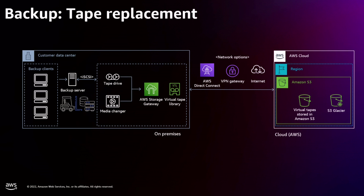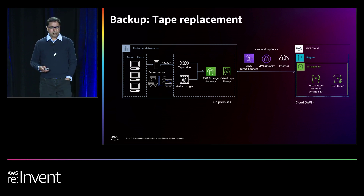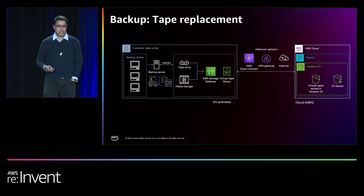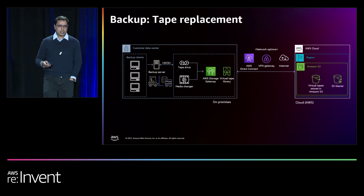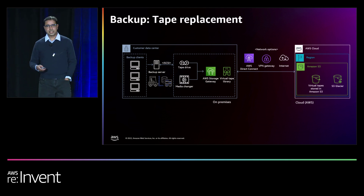A similar use case involves customers still deploying tapes — LTO tape vendors are still selling tons of tape to enterprise customers. With Storage Gateway, instead of using a physical tape library, the target becomes a virtual tape gateway, and customers can point their data to the cloud. This eliminates the need to purchase tapes and physically load and unload tape drives. Customers often can't even retrieve tape data on time, so moving to the cloud for tape backup is a clear improvement.